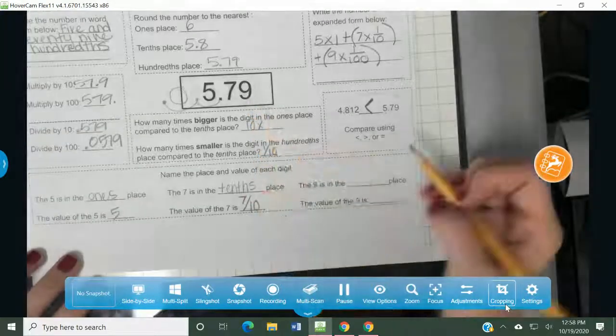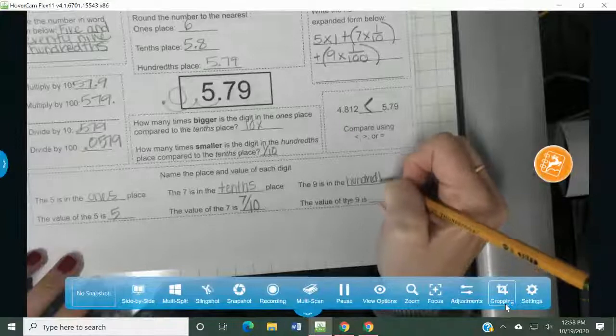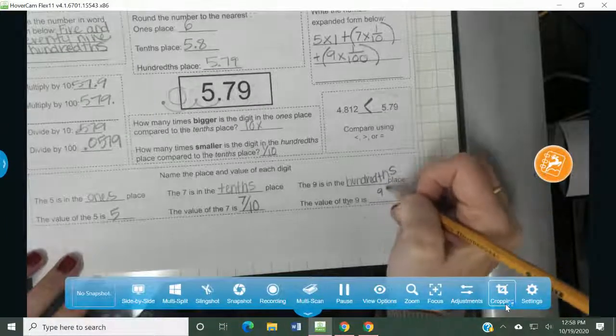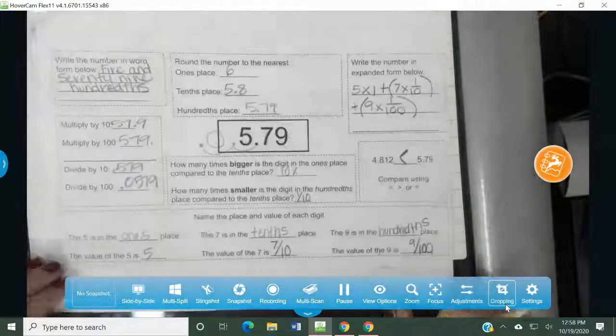The nine is in the hundredths place. And the value of the nine is nine hundredths. So nine over a hundred. And that's it.